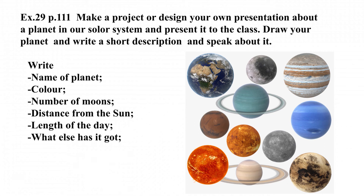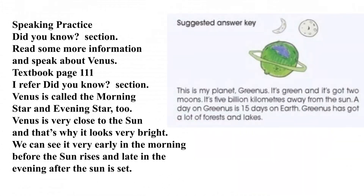Write the name of the planet, its color, number of moons, distance from the sun, length of the day, and what else it has got. Children, here is a suggested answer. You may use it as an example.